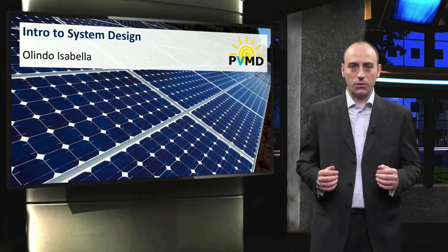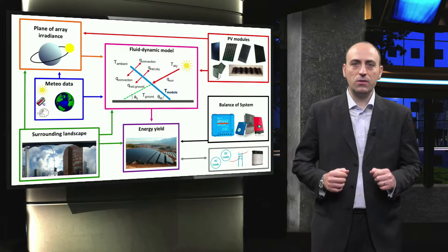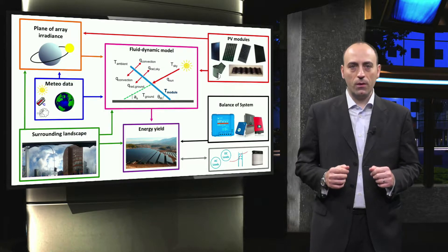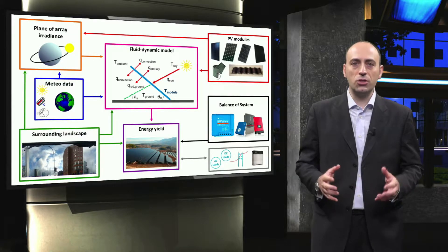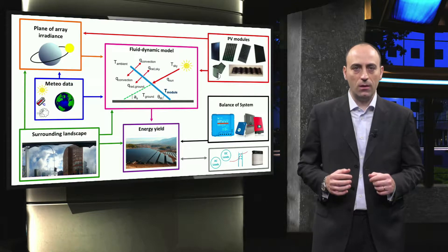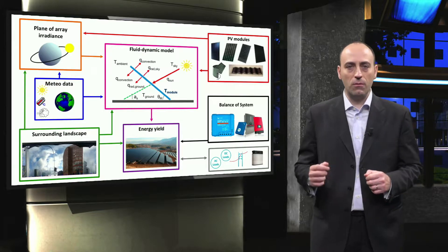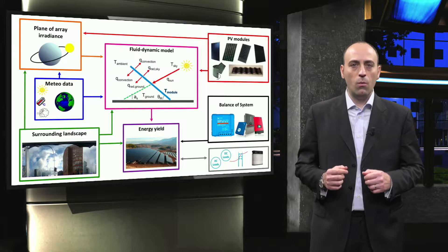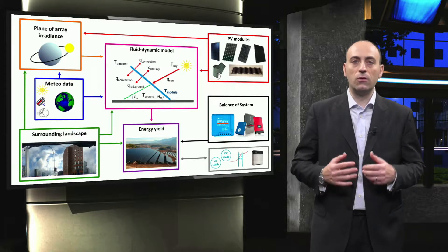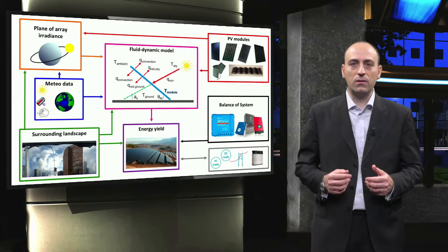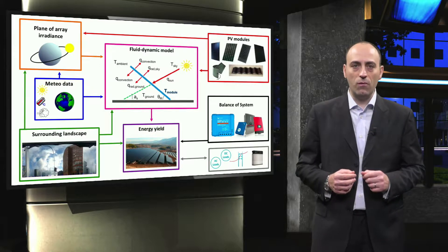Welcome to week 7 of this course. Let's again take a look at the PV system design overview. In the previous weeks, we have discussed many of the essential steps in PV system design. We looked into location-related issues and the PV modules. We have discussed how the fluid dynamic model takes into account the temperature and the irradiance effect to accurately predict the DC side yield of a PV module.